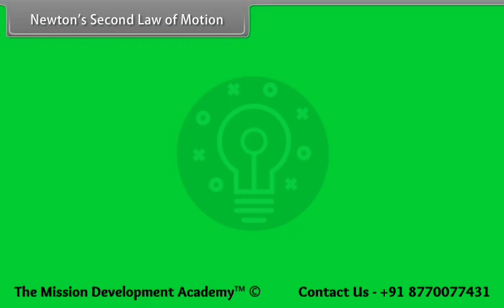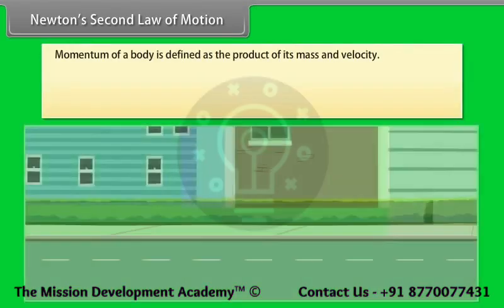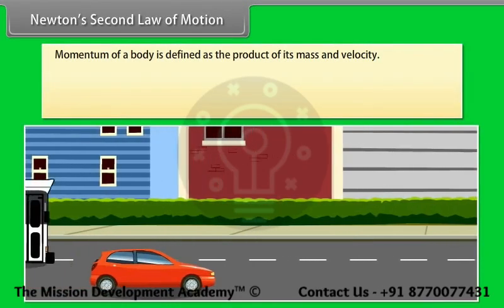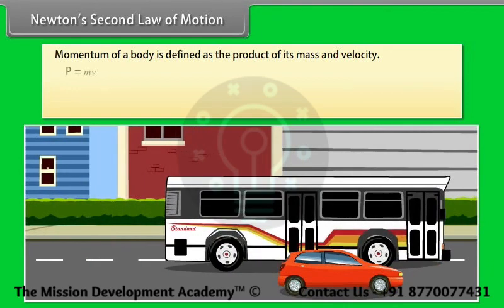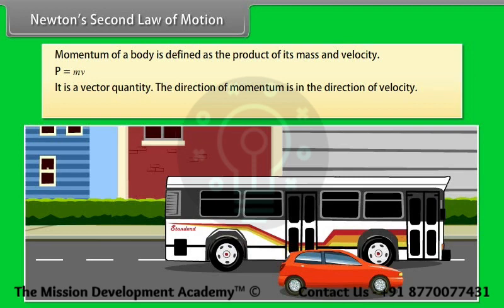Newton's second law of motion: First, we will talk about momentum. Momentum of a body is defined as the product of its mass and velocity: P = M × V. It is a vector quantity. The direction of momentum is in the direction of velocity. Its SI unit is kilogram meter per second.